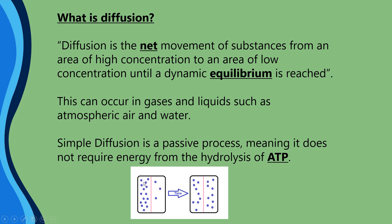The molecules are going to be bouncing across left to right with kinetic energy. But over time the net movement is towards equilibrium, so that we have an equal number either side of the membrane — until a dynamic equilibrium is reached. I always tell my students: equilibrium, think equal — an equal amount either side. And when we think about net, think about net pay. Your net pay is the amount of pay you get after tax has been deducted.